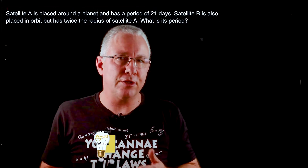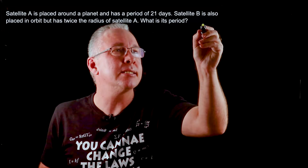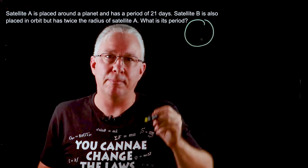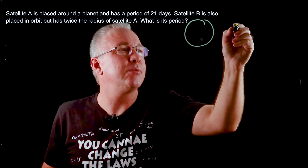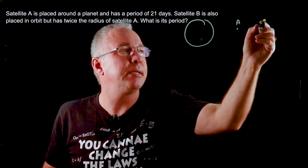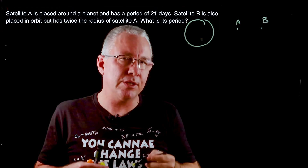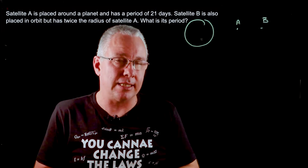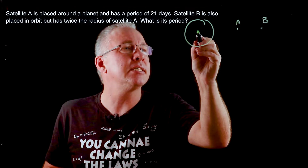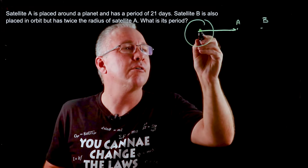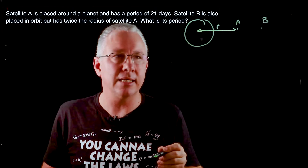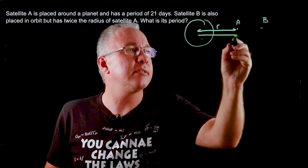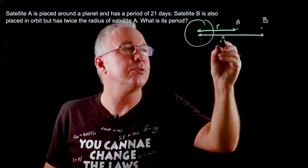Here is a classic Kepler's third law problem. We have two satellites orbiting around a common planet. Here's our common planet, and we have satellite A positioned here and satellite B positioned here. We're told that satellite B is twice as far as satellite A, so if this is our distance R, then the distance for B is equal to 2R.